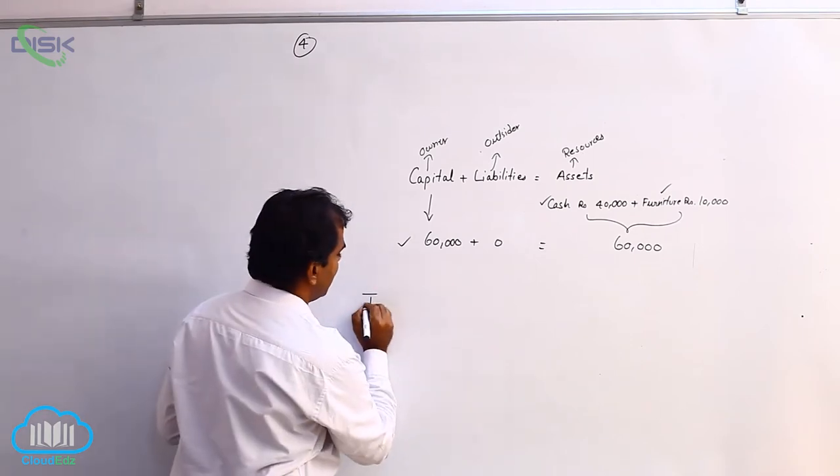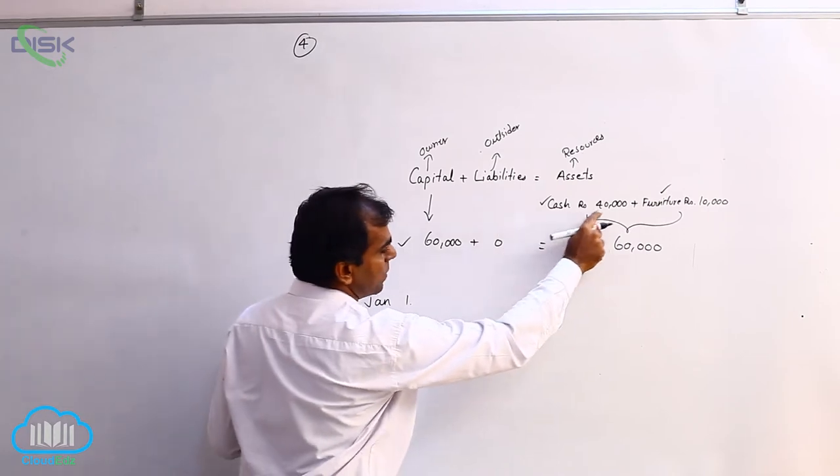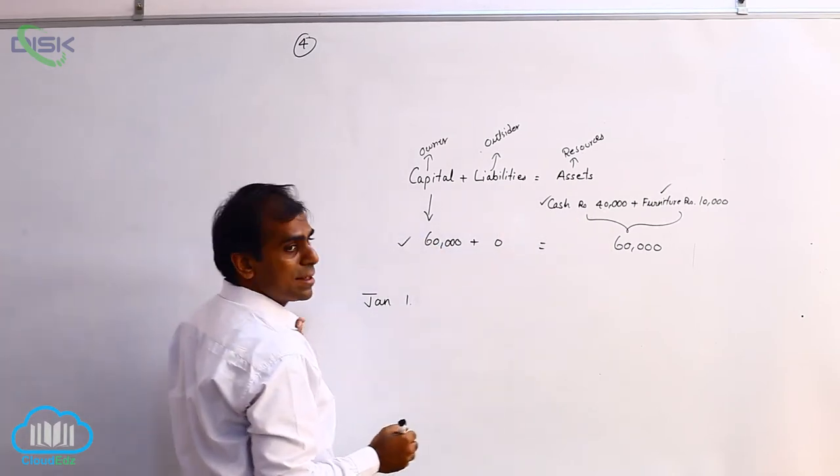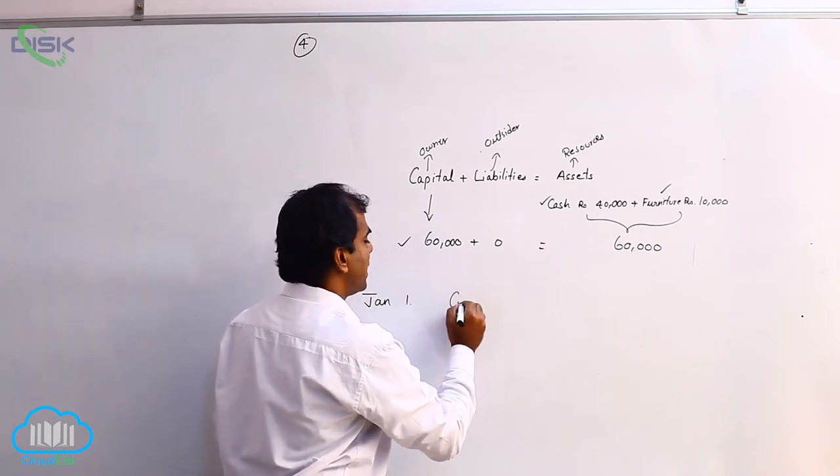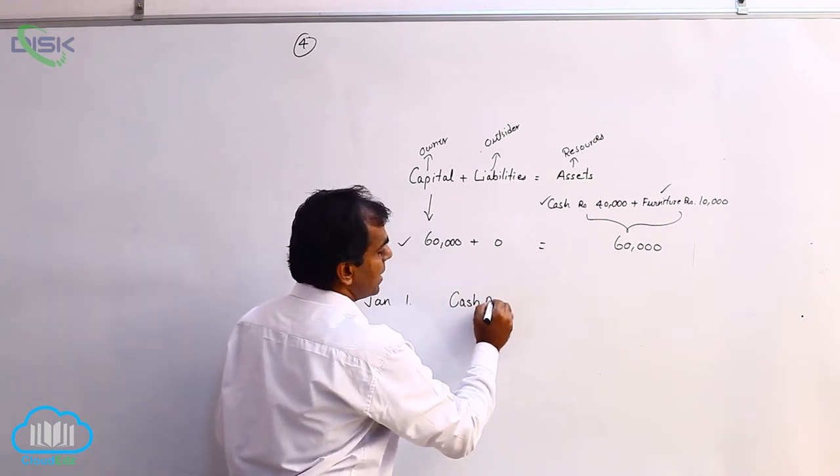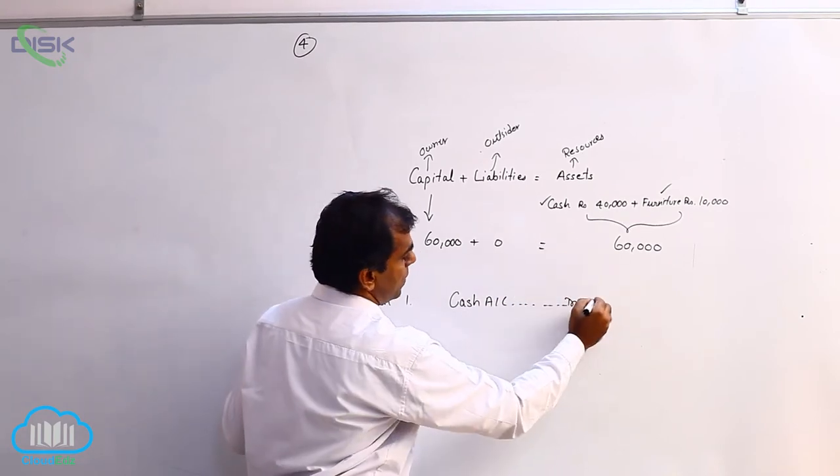So on January 1st we will say the business is getting cash from the owner. Cash is a real account and the business is getting it, so debit what comes in. We debit cash account 40,000.